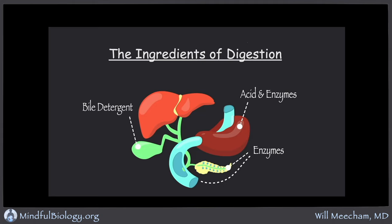Enzymes are present in saliva; they come out of the glands along the stomach lining and from the pancreas, and some are also secreted by the small intestine. But even all of those enzymes are not sufficient. The body depends on enzymes that come from yet another source, and that source is bacteria. The bacteria that live in the digestive system produce a very wide range of enzymes that help us digest foods. Bacteria can also generate vitamins that we are unable to synthesize on our own. So bacteria are important components in digestion.